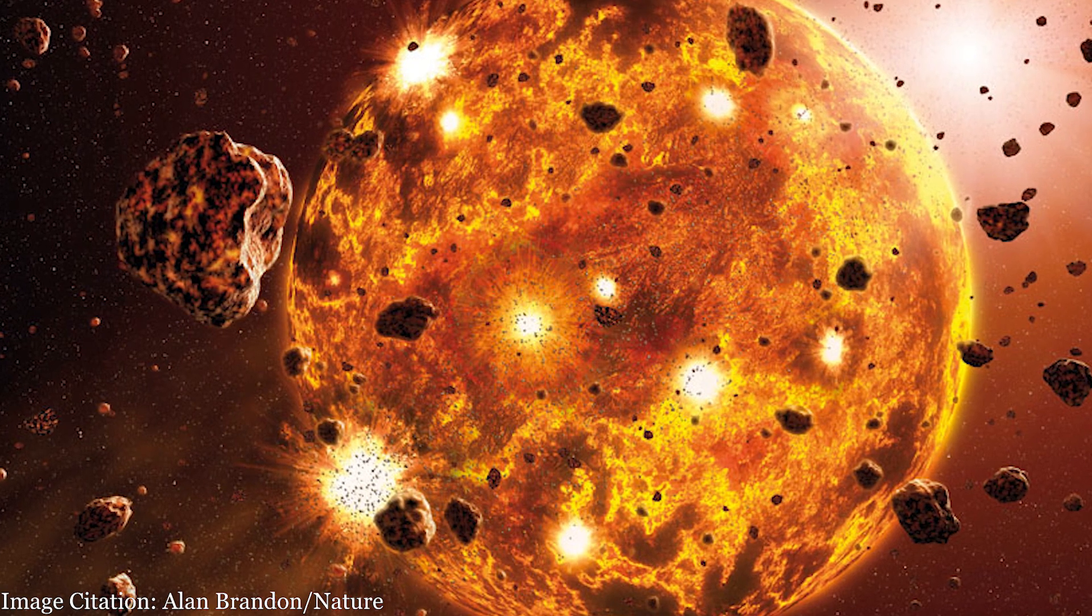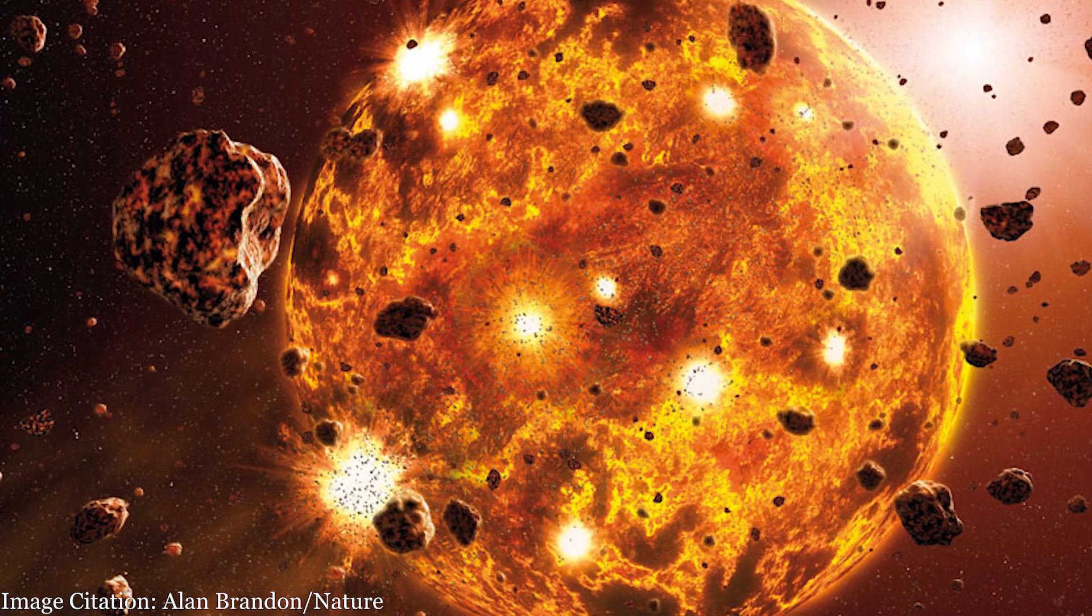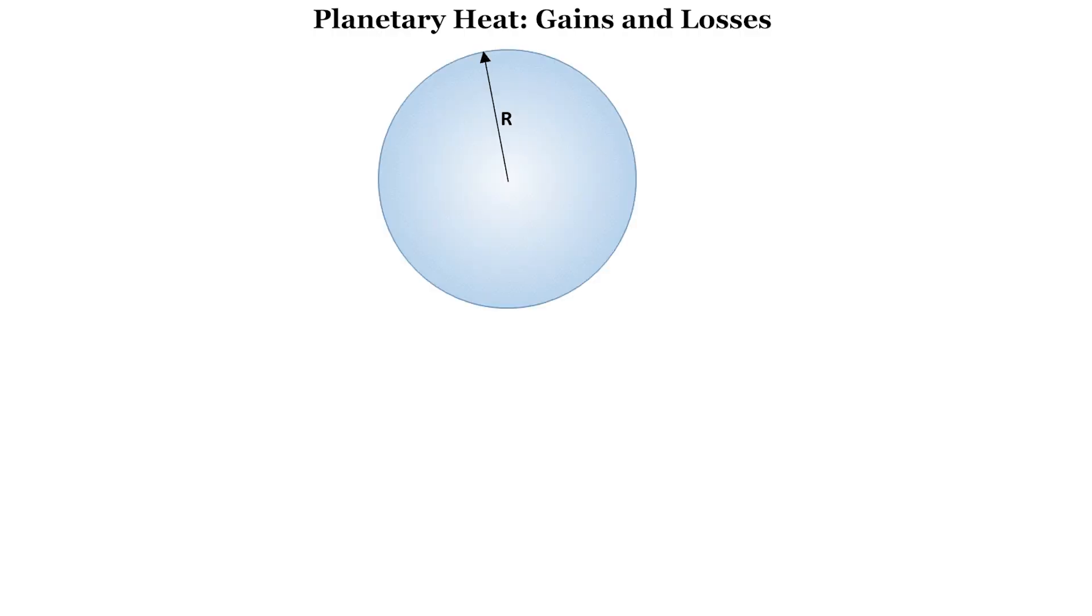In general, planets were hot objects when they were first formed. The greater the size of the planet, the greater the number of planetesimals it takes to make it, and the more thermal energy stored during formation. Thus, the heat energy from accretion is proportional to the volume of the spherical object, given by volume equals four-thirds pi r cubed.